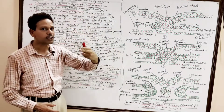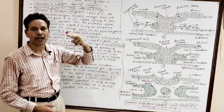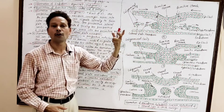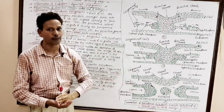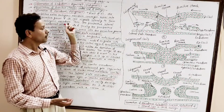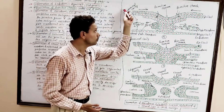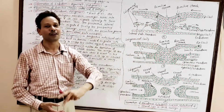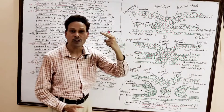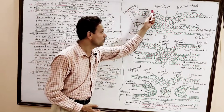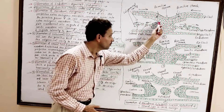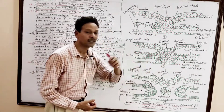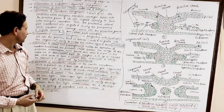In mesogenesis, first the prospective extra-embryonic mesoderm cells converge, invaginate, and move outward to produce extra-embryonic mesoderm. Then the prospective lateral plate mesoderm converges, invaginates, and moves outward to produce lateral plate mesoderm. Finally, the prospective somatic mesoderm converges, invaginates, and produces somatic mesoderm in the central region.